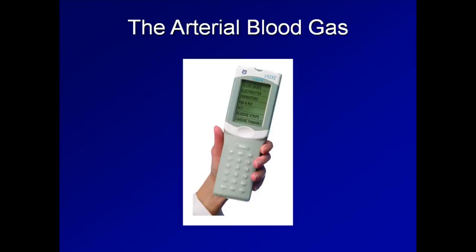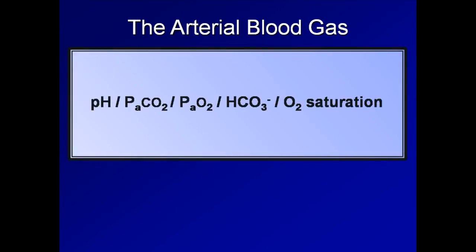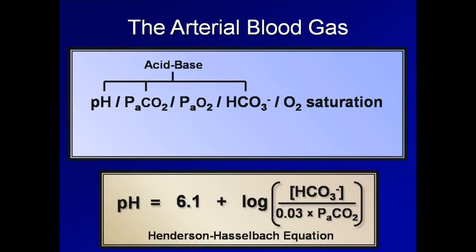Depending on the exact model of analyzer and on the type of cartridge used, the ABG can provide an array of various measurements. In addition to the three I just mentioned, it also always includes the bicarbonate level as well as the arterial O2 saturation of hemoglobin. The pH, PaCO2, and bicarb are used in determining the acid-base status of the patient — that is, whether the pH of arterial blood is normal, too acidemic, or too alkalemic. These values are related via the Henderson-Hasselbalch equation, which will be discussed a bit in lecture 2.